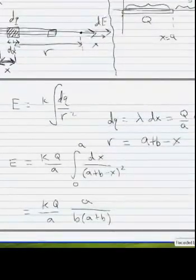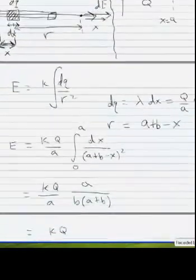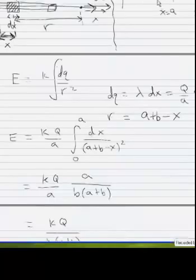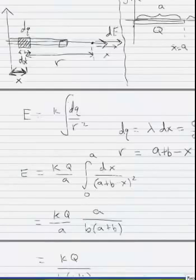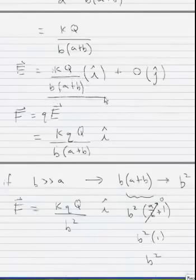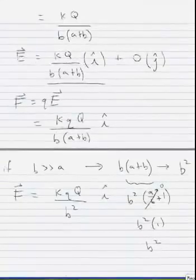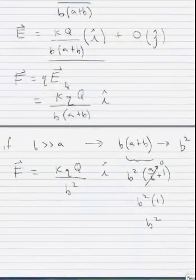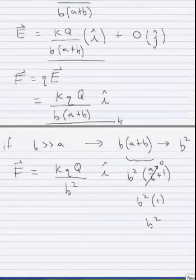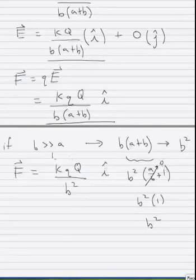We can go back and check a couple of things. We know that the electric field from a positive charge distribution points away from that distribution, so we expect our electric field to point in the positive x direction — and that's what we have. If we put a positive point charge q at some location on the positive x-axis, the force is going to be along the positive x direction. And we showed that when b is much greater than a, the force ends up looking like the force between two point charges.